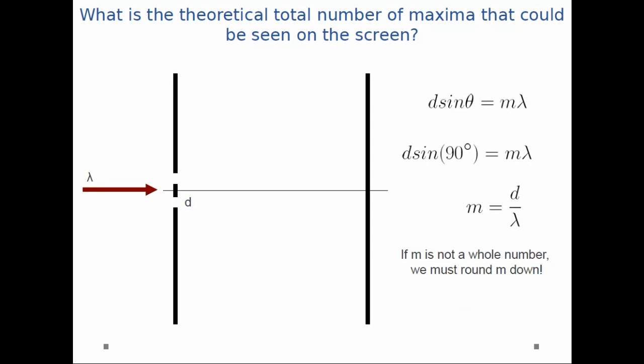However, if m is not a whole number, it means we haven't yet reached a new bright spot—we're partway between two bright spots. So we must round m down because we don't want to overcount the number of bright spots on the screen.